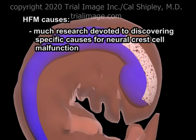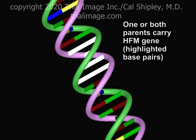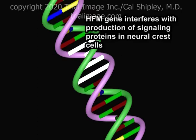Much research has been devoted to uncovering specific causes for the impairment in stem cell potential in this disorder. To date, the only cause for which there is solid scientific evidence is an inheritable genetic form of the disease. In this inheritable form, one or both parents of the affected child carries the gene for HFM. The specific gene sequence for HFM in human DNA has not yet been discovered, but it is likely that it interferes with the production of normal signaling proteins in the neural crest cell.